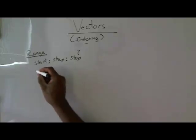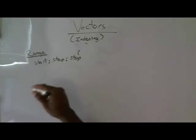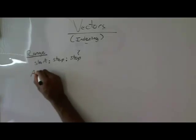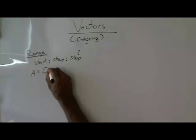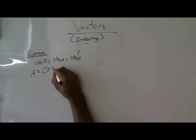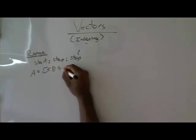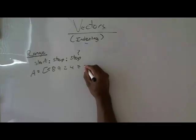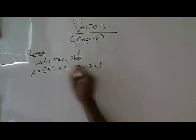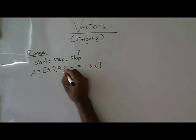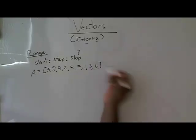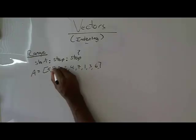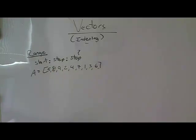And so you can also index a vector using that. So what does that mean? Well, let's start off with the vector A, and let's give it the following values: five, eight, nine, two, four, seven, one, three, six. So all of these have spaces in them, so all of these are single-digit values.